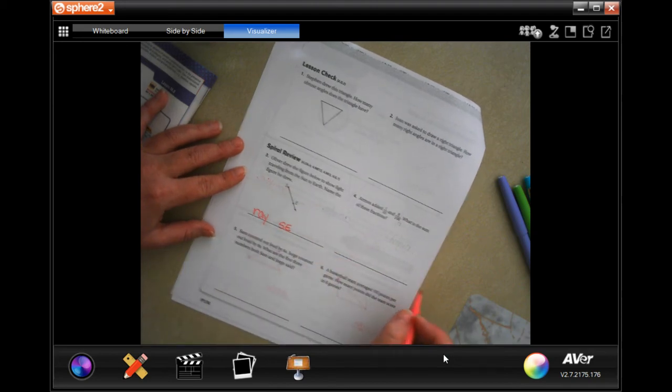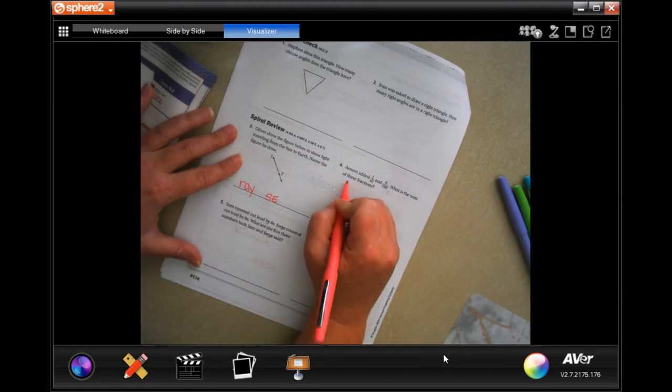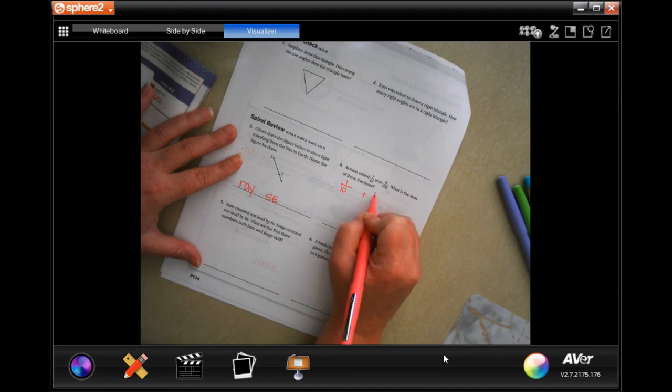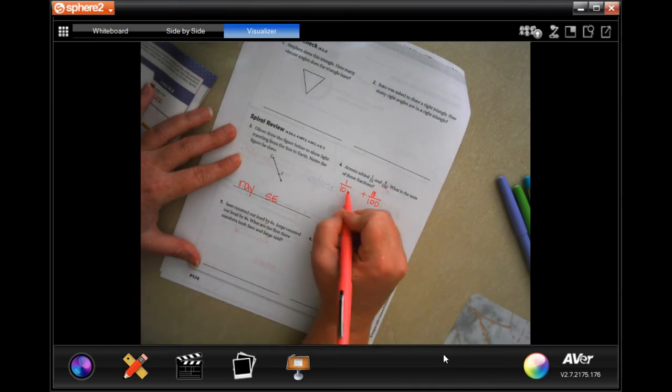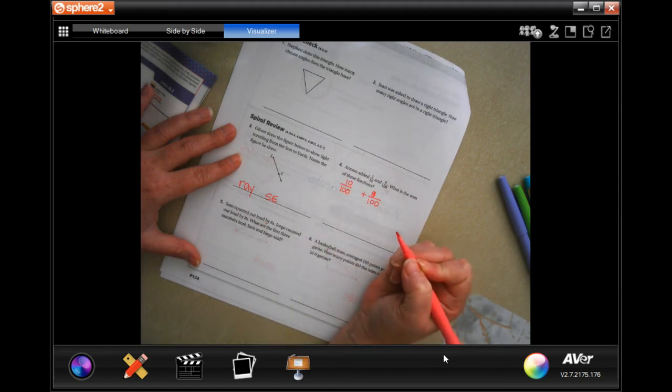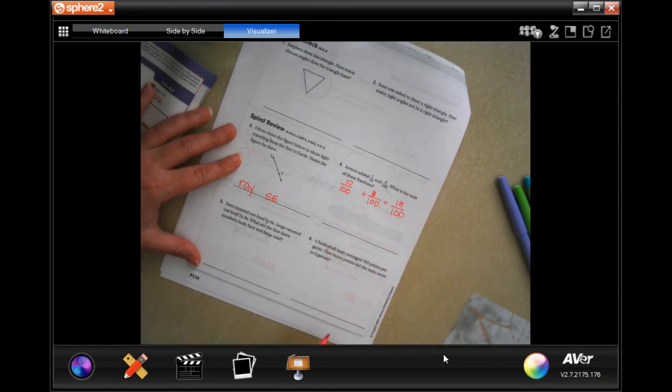Armon added one tenth and one one hundredth, what is the sum of these fractions? Well, the cool thing about having a base of 10 is in order to make it 100, all you have to do is add a zero to top and the bottom - you can multiply them both by 10, which is just adding a zero. So now 10 plus 8 is 18, and the denominator stays the same, all done.